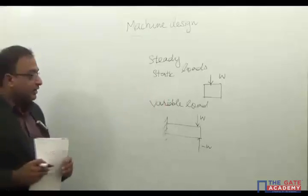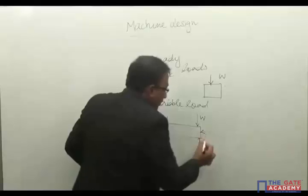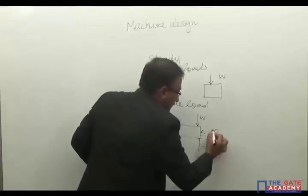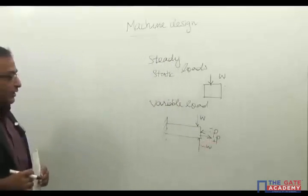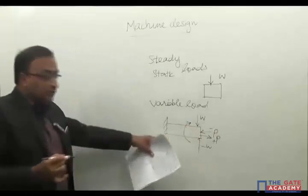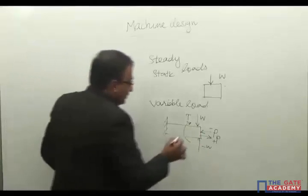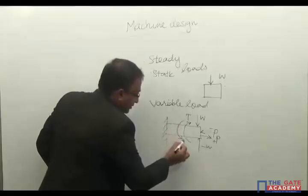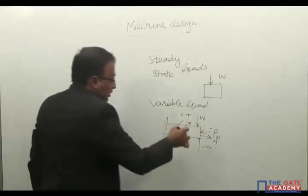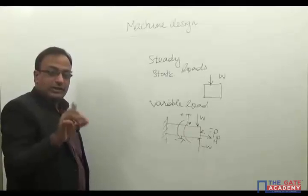Similarly, there may be an axial load varying from compressive to tensile — negative compressive to positive tensile. In the case of shafts, a torque T may act in one direction and after some time become T in the opposite direction, changing from clockwise to counterclockwise after a fixed duration of time. This is another example of a variable load.